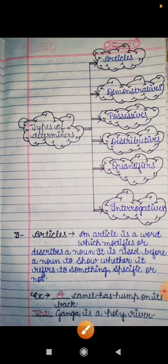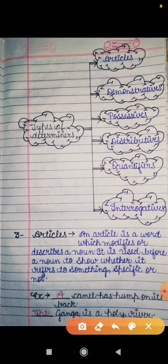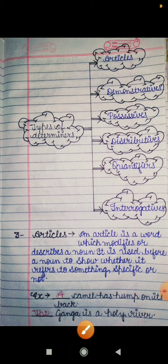Let's see the examples of articles. First: 'A camel has a hump on its back.' Camel is a noun — it is a common noun — and 'a' is the article used before it, referring to an indefinite thing. Second: 'The Ganga is a holy river.' As I already told you in the explanation, 'the' is used with proper nouns and with things which are one in the whole world. Ganga is one in the whole world, that's why 'the' is written here. So let's see the next definition.